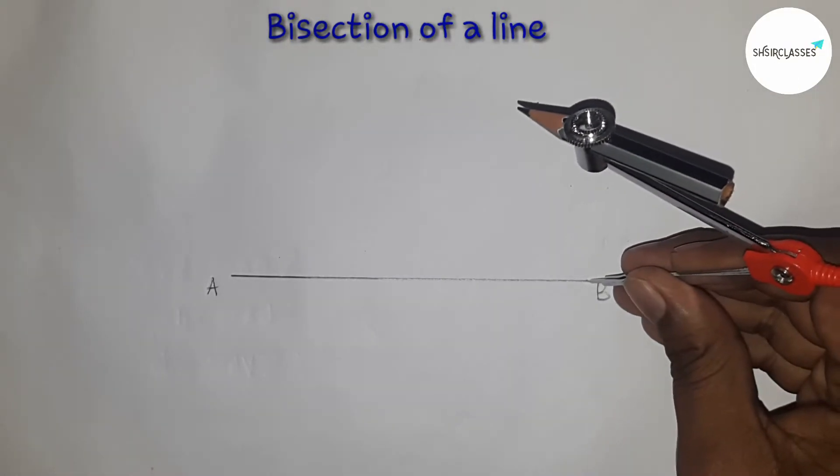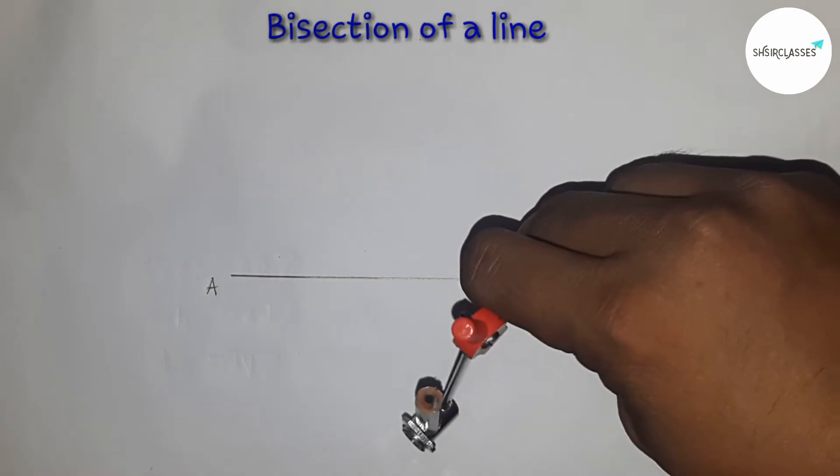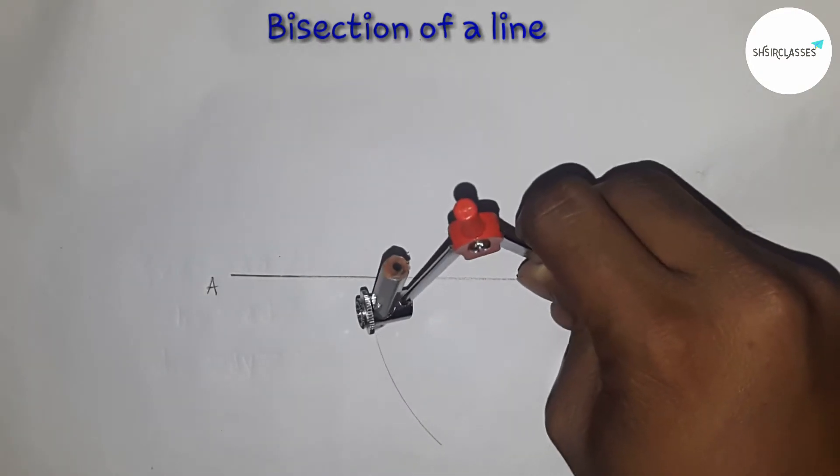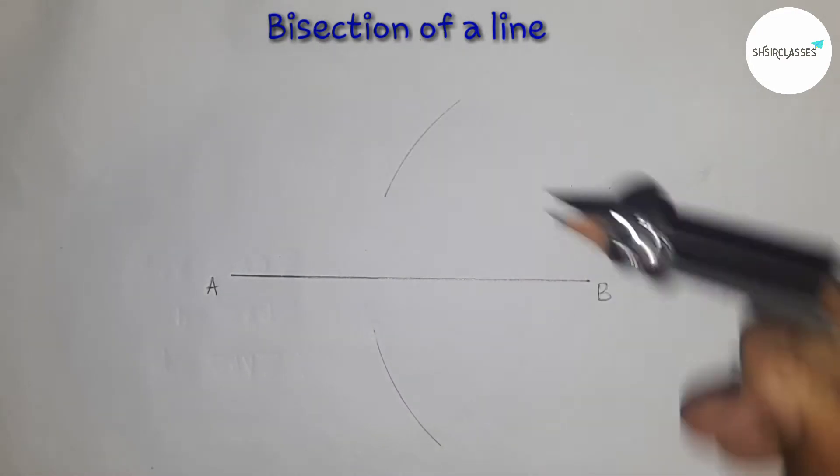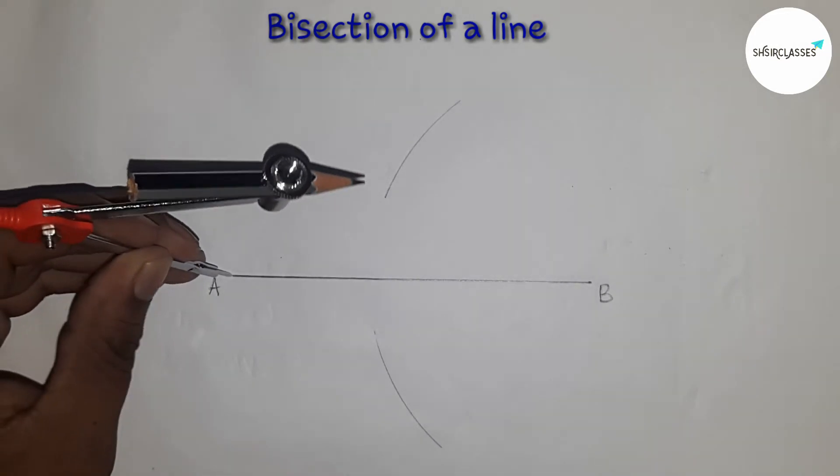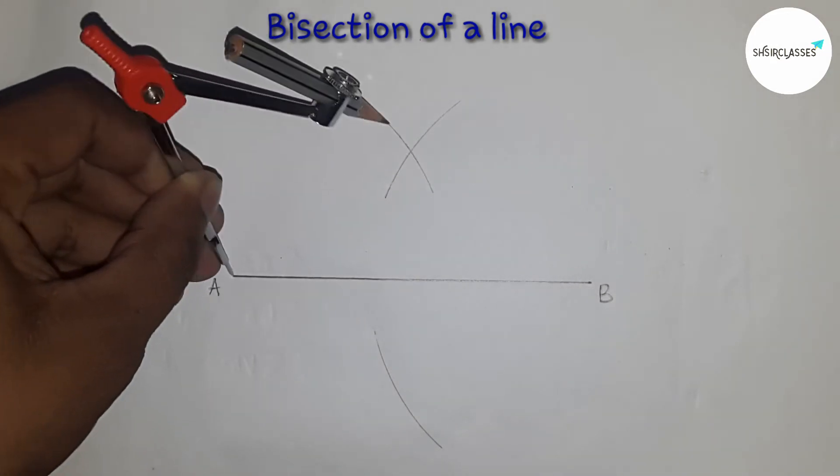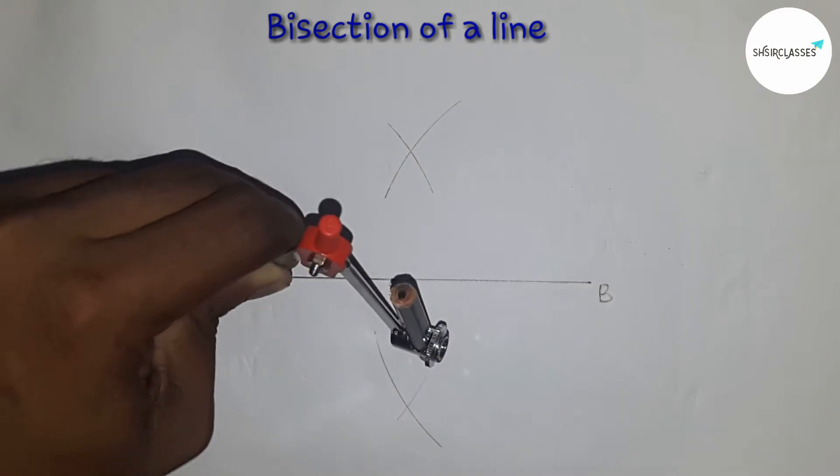Taking a measure more than half of AB and drawing a curve, putting this and drawing. Similarly, putting this here and drawing to cut the curve. Similarly, cut the curve here.